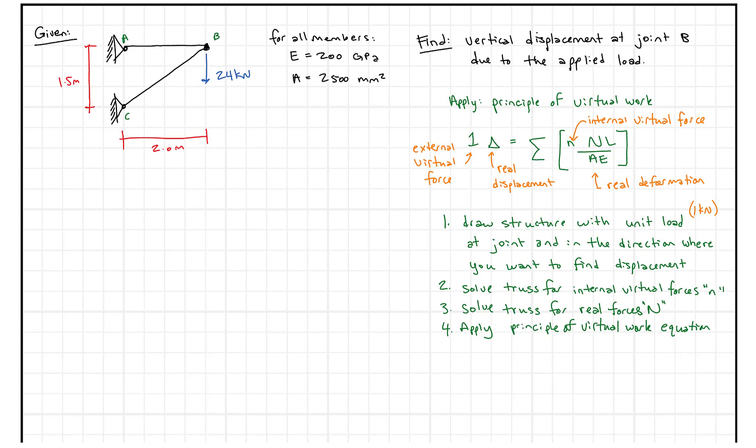You might be given something that looks like this, where you have two members AB and BC, and we're given some member properties. What we want to do is find the vertical displacement at the joint — specifically, joint B.